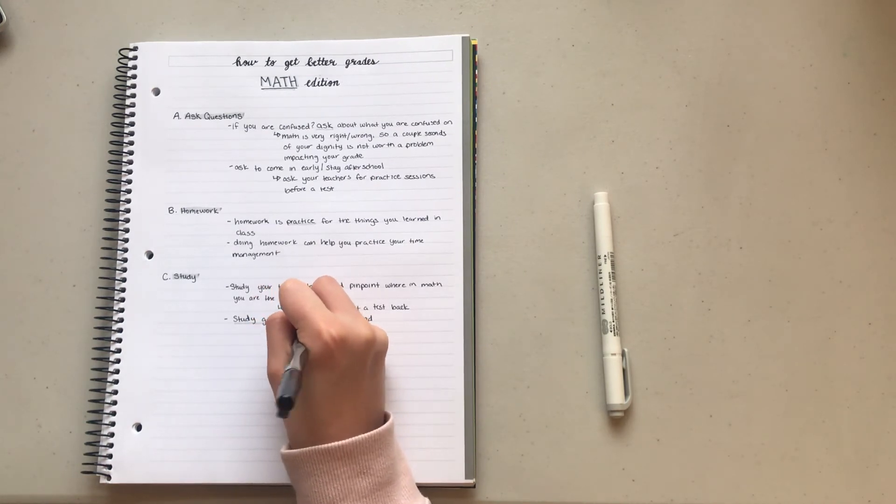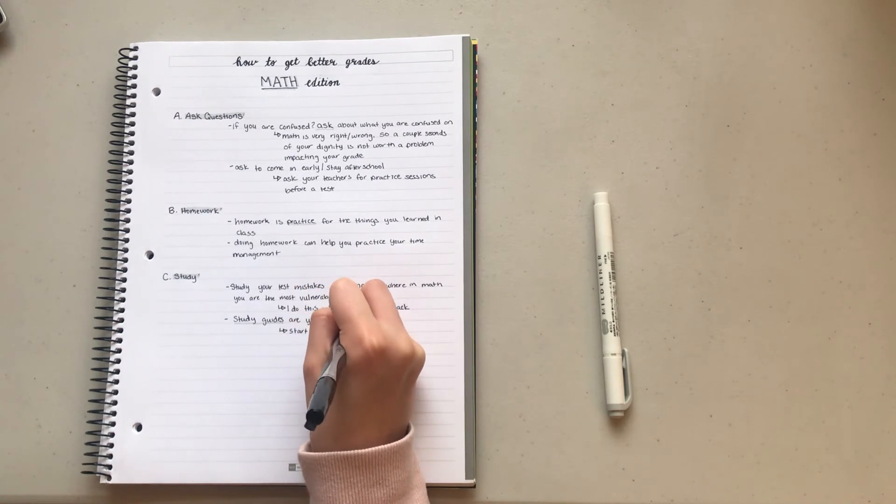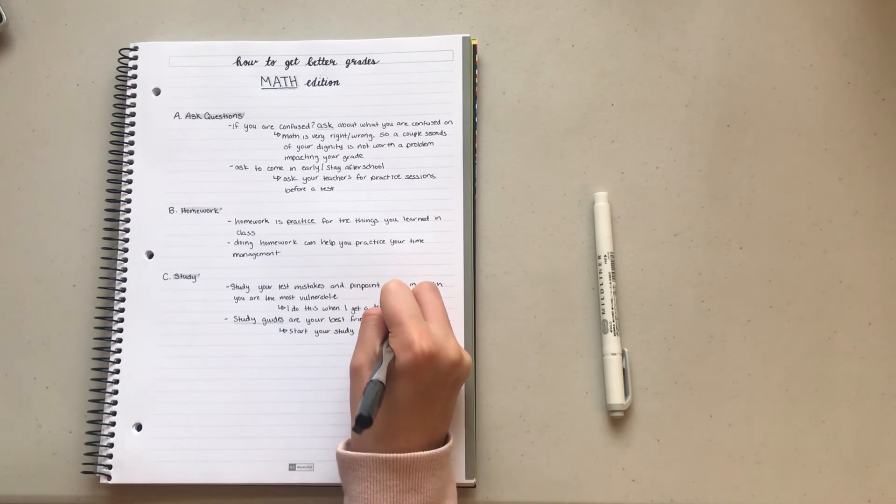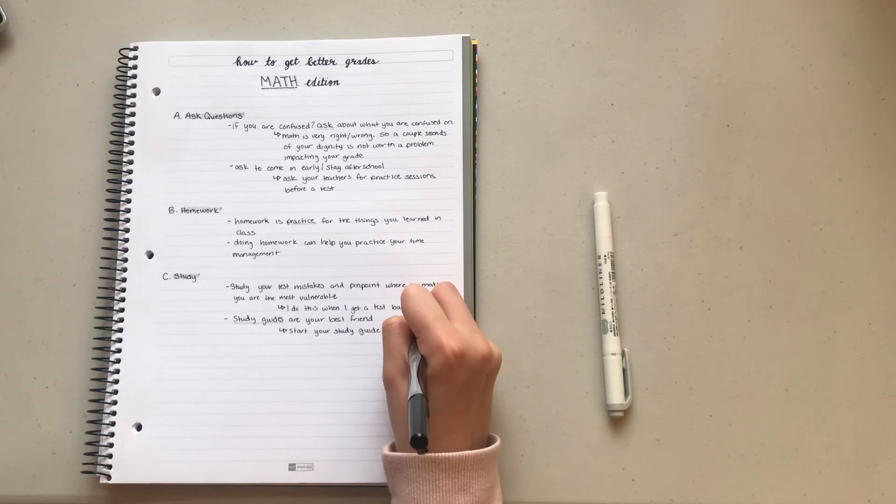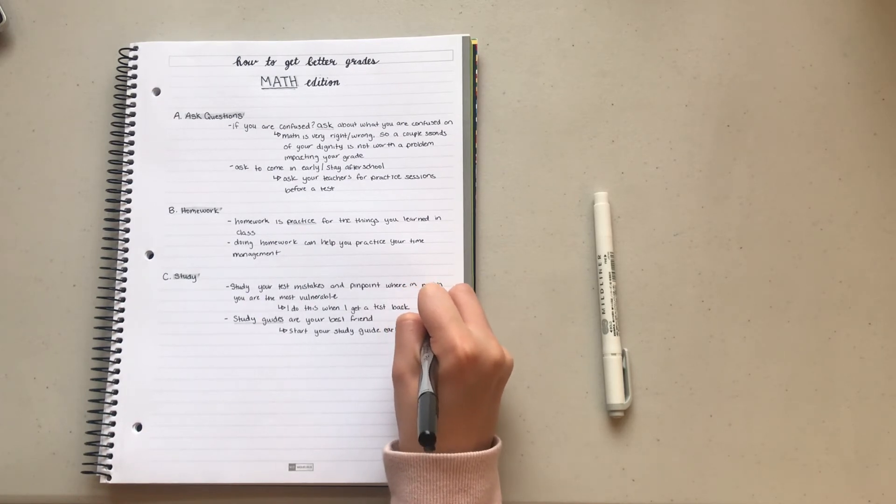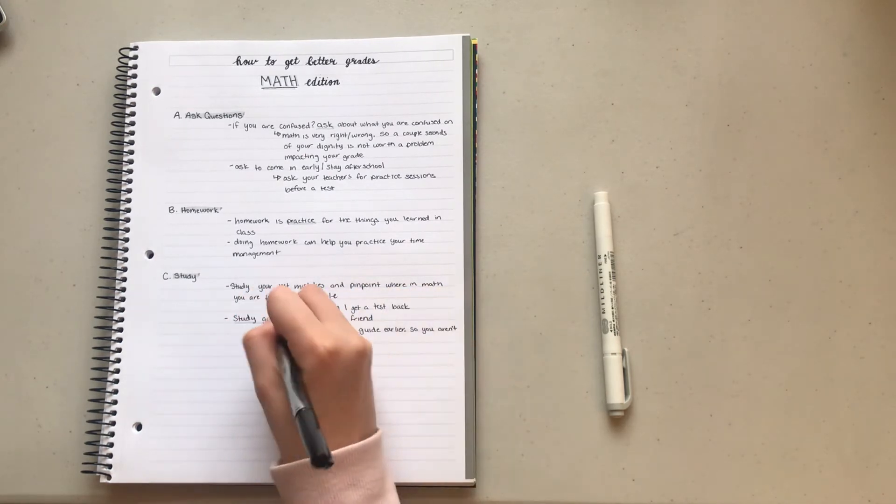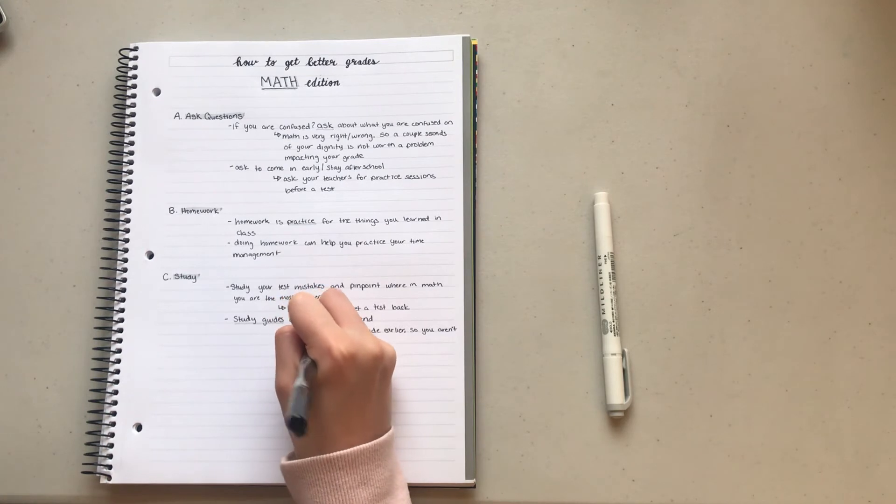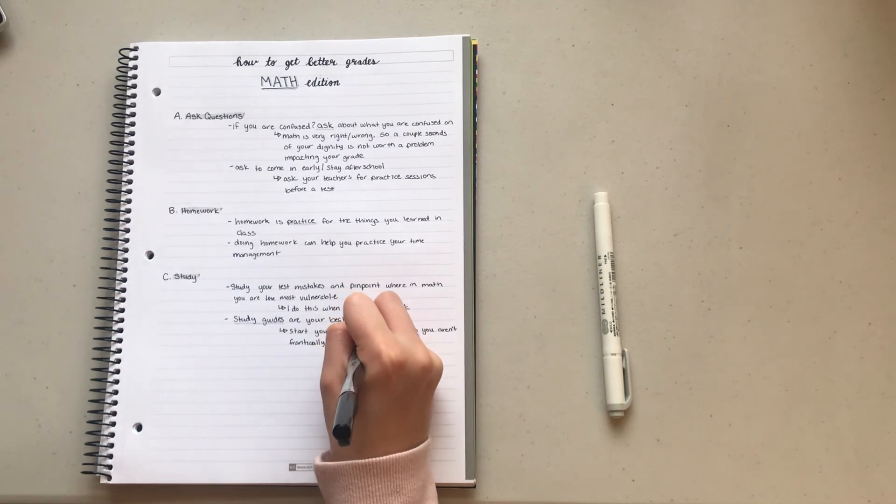I start with making a list of the key concepts for each unit. Usually our teacher in the beginning of the unit will also provide these things. This will help you sum up everything you learn, and then afterwards you can elaborate on each concept, and so you will be able to group all the knowledge and then write it down in your study guide one by one to hopefully remember it better.